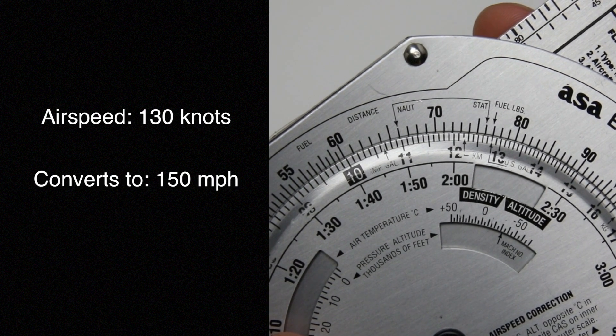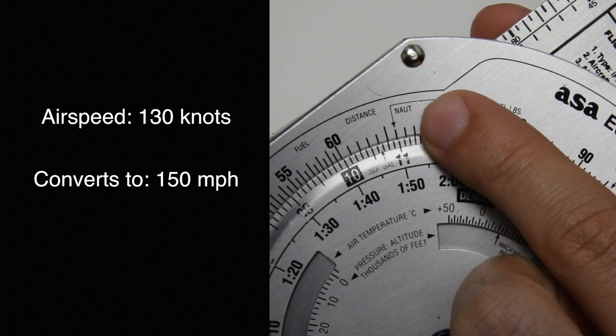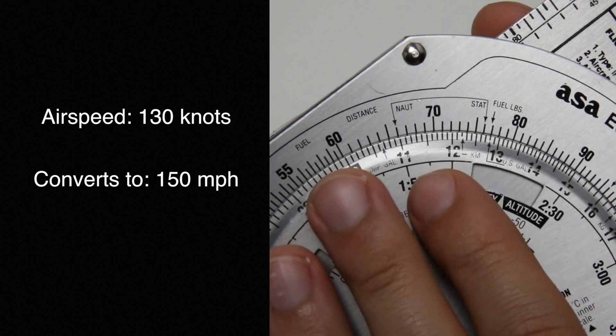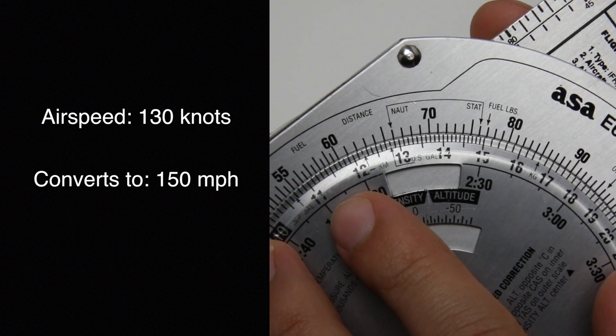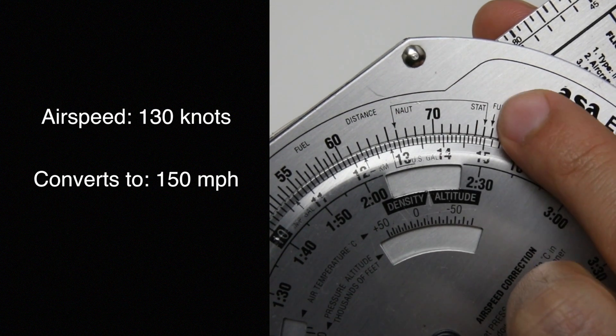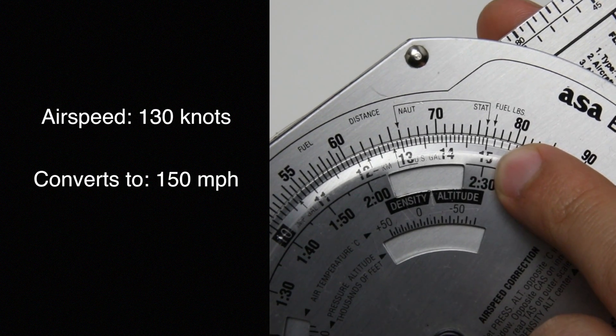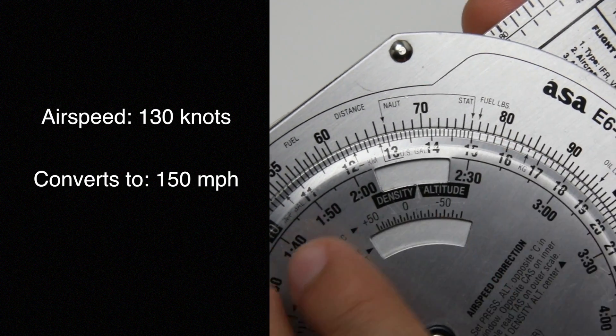first select 130 knots for this example under the nautical mile marker. So we turn it to 130 and then we follow that arrow and read right under statute miles that we're going to be going 150 miles per hour. We'll do another example,